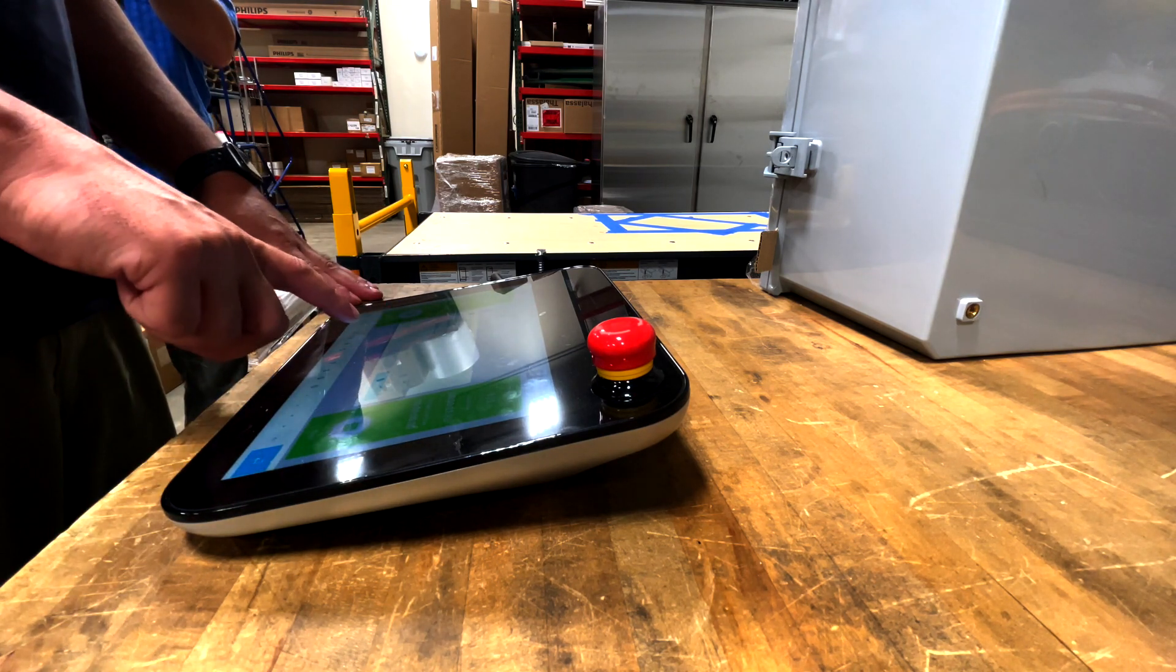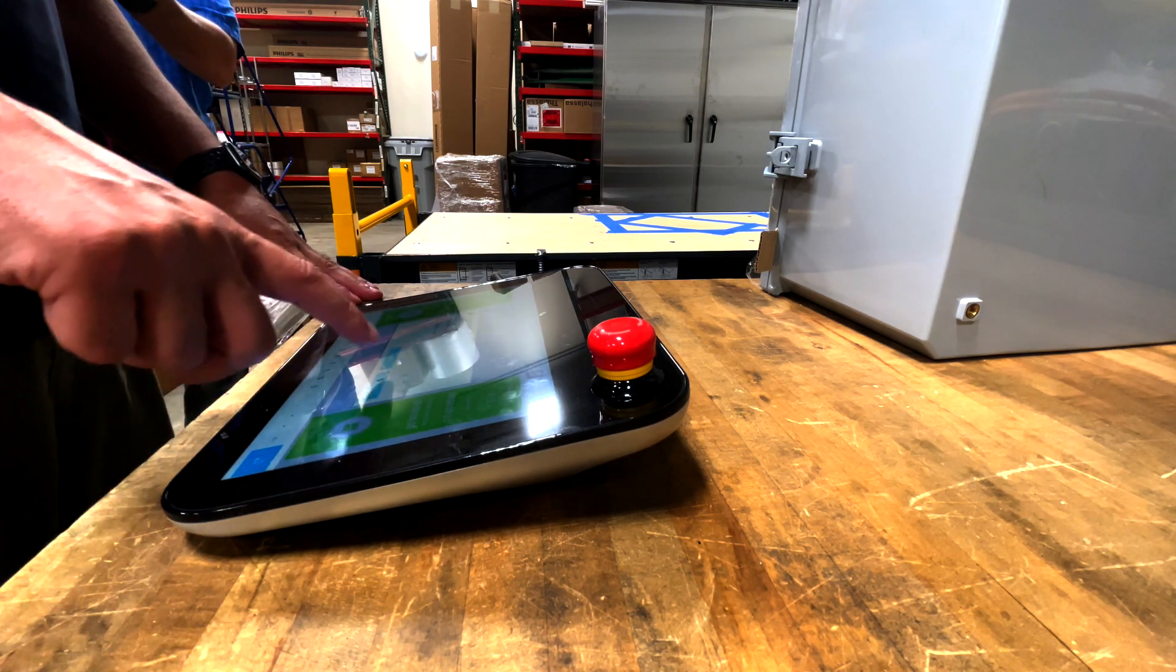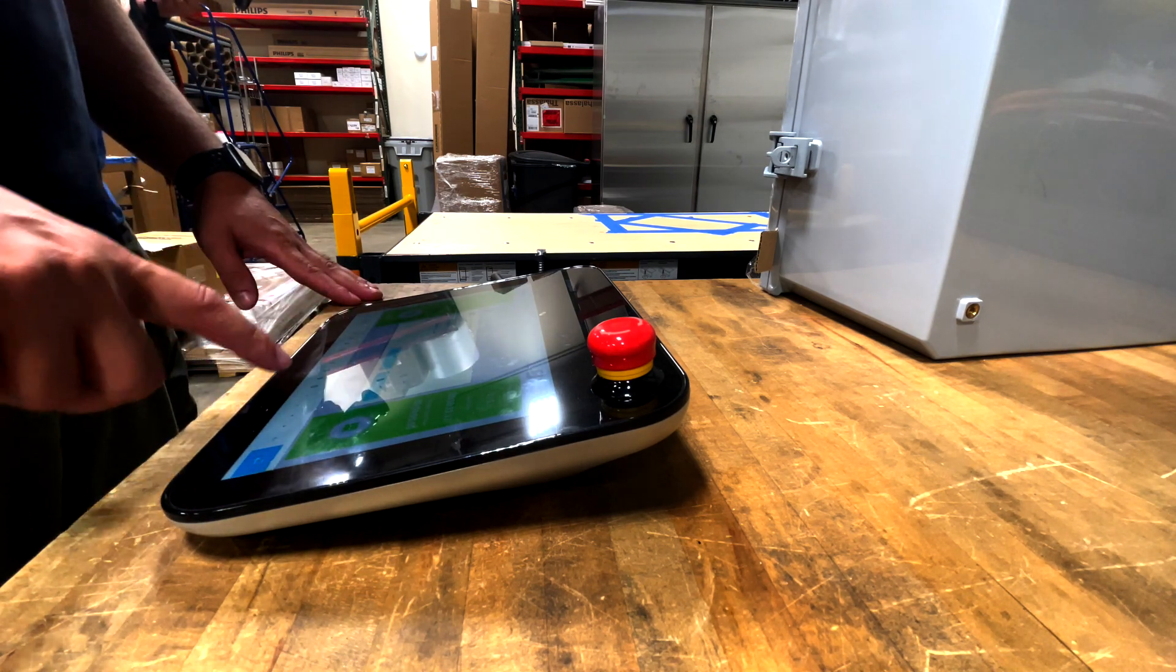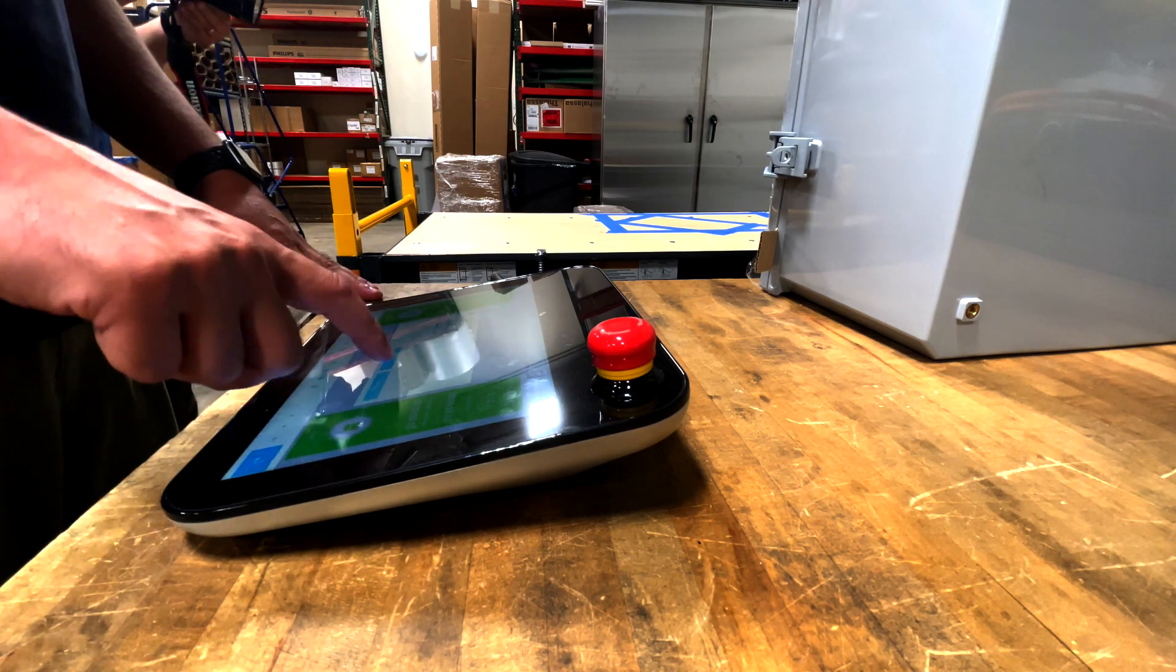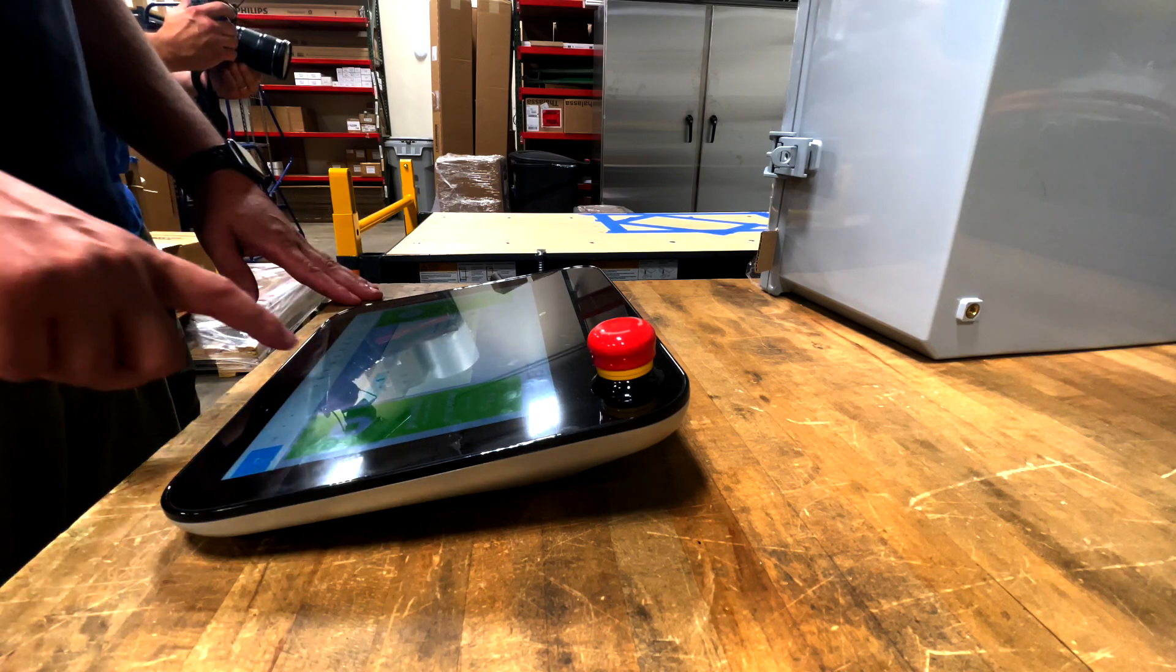We're going to ask for a sanding speed, we're going to go with 200mm per second. Sander RPM, we're going to do 2000, and then sanding pressure we're going to do 5 pounds.